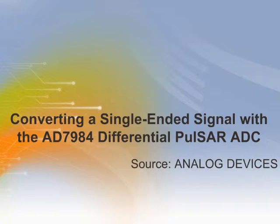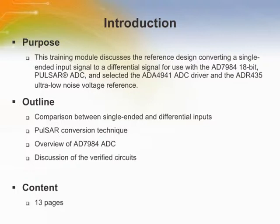Welcome to this training module on Analog Devices: Converting a Single-Ended Signal with the AD7984 Differential Pulsar ADC. This module discusses a verified circuit reference design that converts a single-ended signal to a differential signal for use with the AD7984 18-bit Pulsar ADC, including the ADA4941 ADC driver and the ADR435 Ultra-Low Noise Voltage Reference.